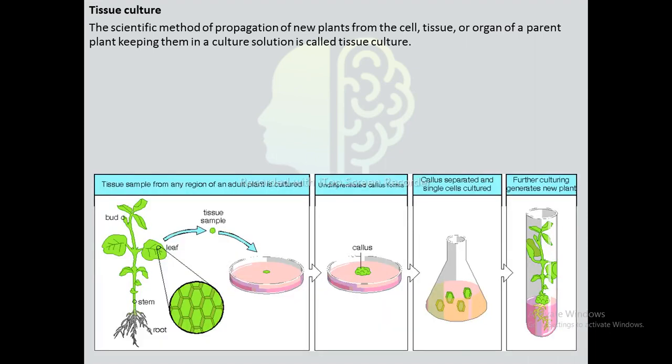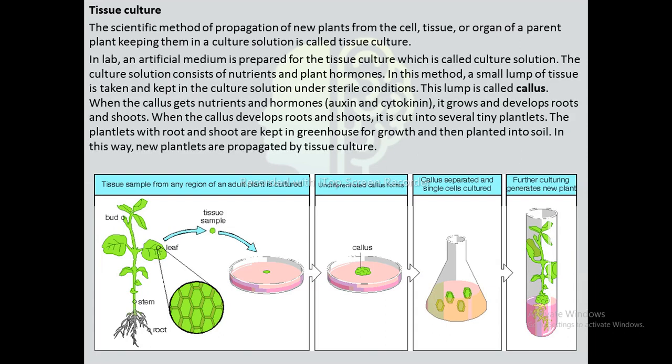In the lab, an artificial medium is prepared for tissue culture called culture solution. The culture solution consists of nutrients and plant hormones. A small lump of tissue is taken and kept in the culture solution under sterile conditions — this lump is called callus. When the callus gets nutrients and hormones, it grows and develops roots and shoots. When the callus develops roots and shoots, it is cut into several tiny plantlets. The plantlets with roots and shoots are kept in greenhouses for growth and then planted into the soil. In this way, new plantlets are propagated by tissue culture.